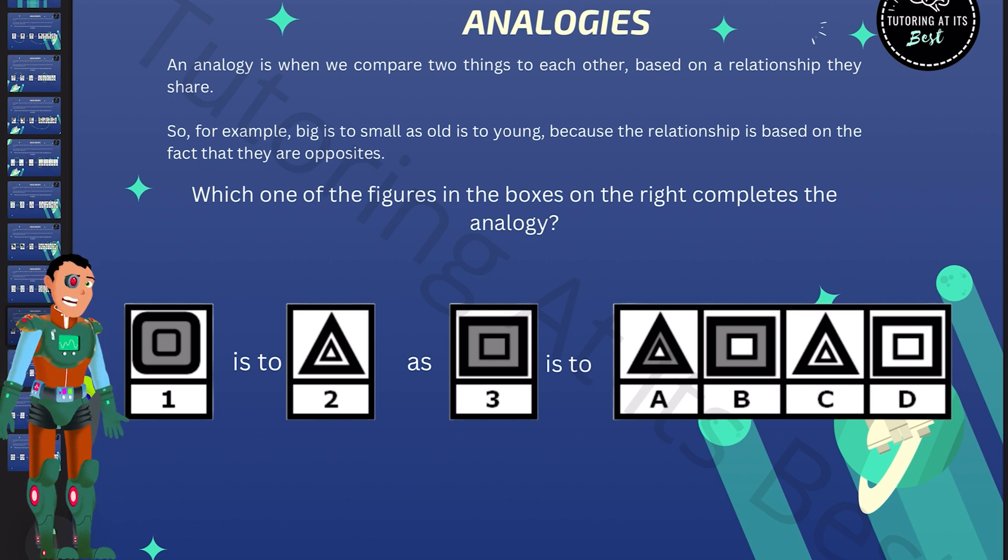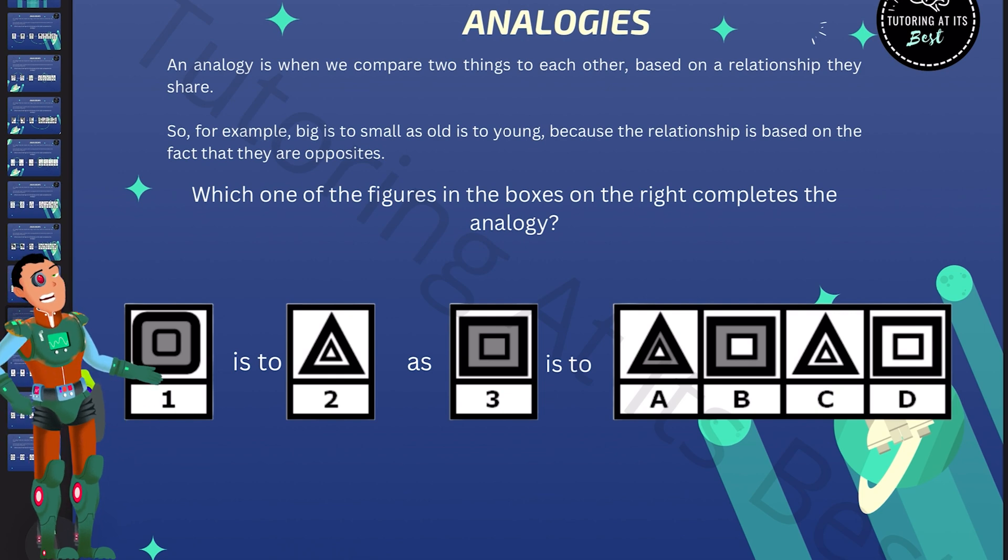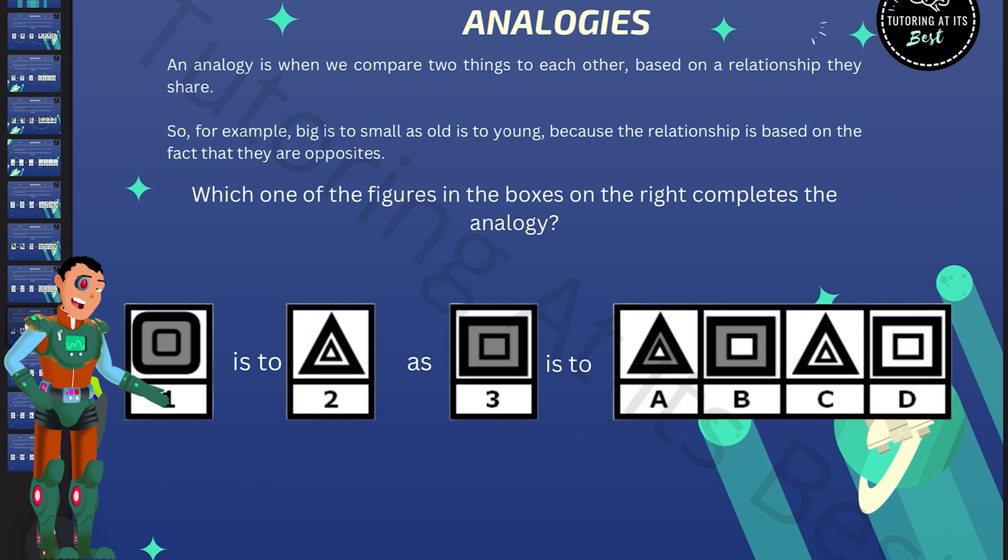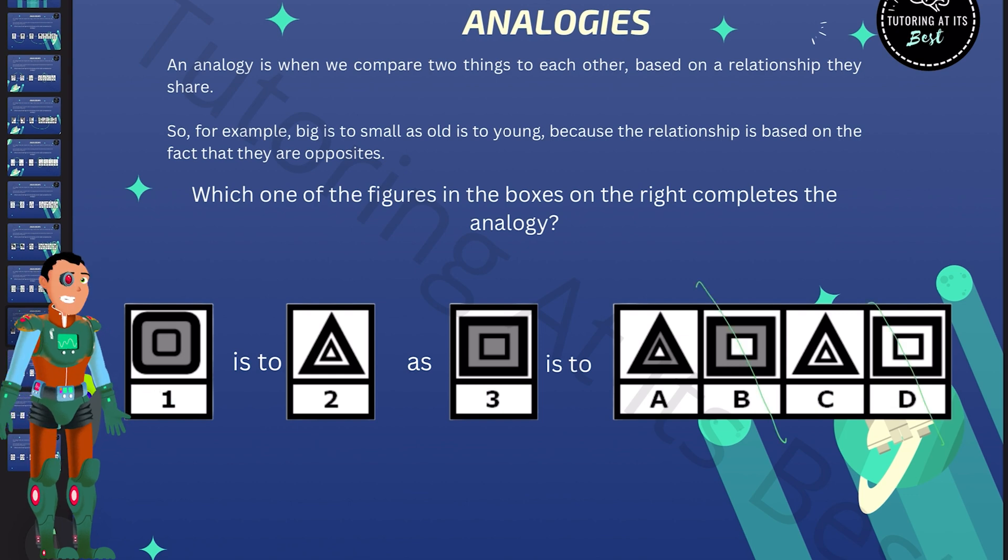Question seven. Which one of these figures in the boxes on the right completes the analogy? Let's take a look at figure one to two. So to get from figure one to figure two, you must change the rounded square into a triangle and replace all gray shadings with white. So to get from figure three to the answer, what are we going to do? Well, we're going to change the rectangle to a triangle. So straightaway eliminate B and D. And we're going to change all the gray shading to white, which means C is our answer.